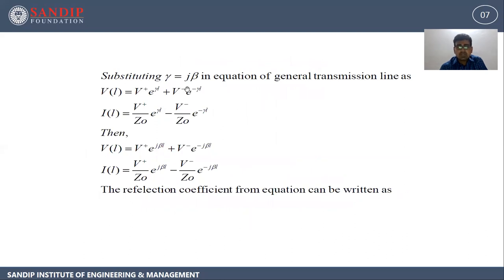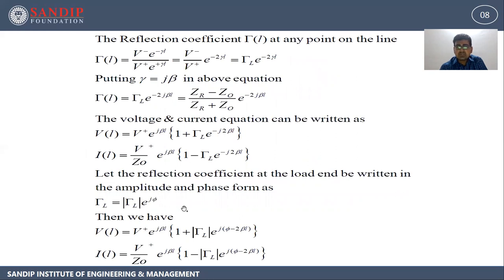If we substitute gamma equal to j-beta in the equation of the general transmission line, then we will get the equations of voltage and current as shown. Now let's see about the reflection coefficient. If I substitute gamma equal to j-beta, then I'm going to get the reflection coefficient for a transmission line of length l as equal to (Z_r minus Z_naught) upon (Z_r plus Z_naught) times e raised to power minus 2j-beta-l.